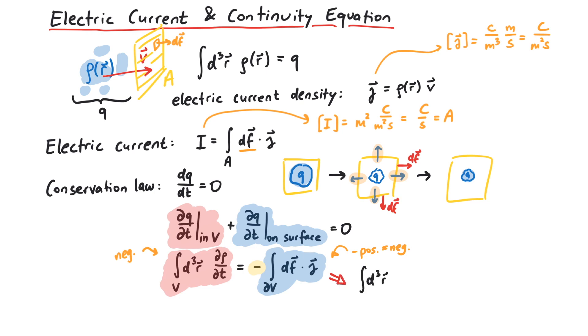Using Gauss's theorem, which turns the surface integral into a volume integral over the divergence of j, we get this expression. Since our discussion should be independent of the volume, we can pick out these two terms and get the continuity equation.